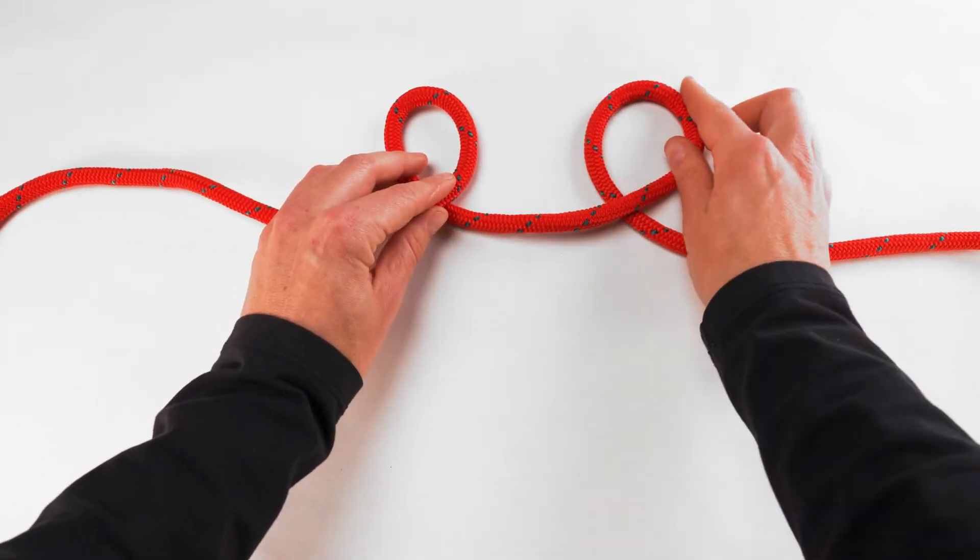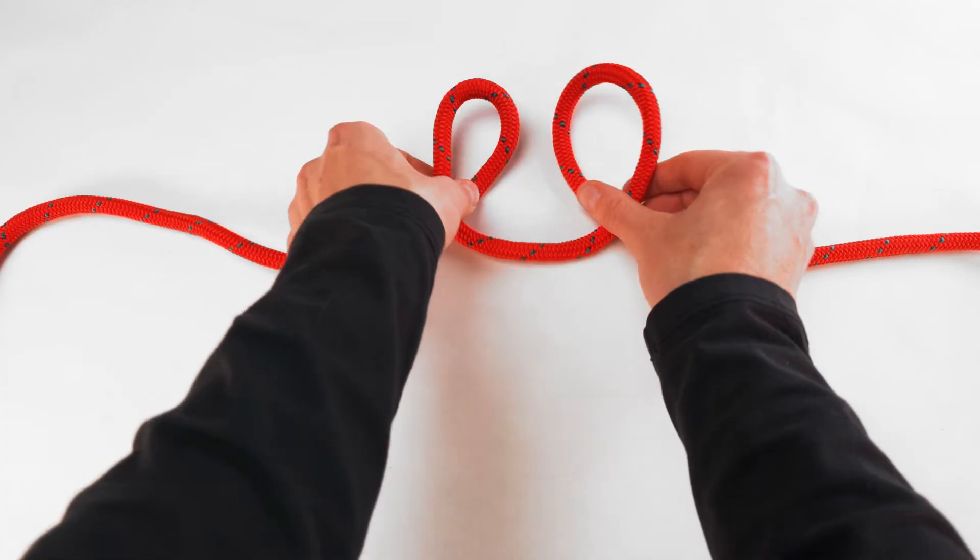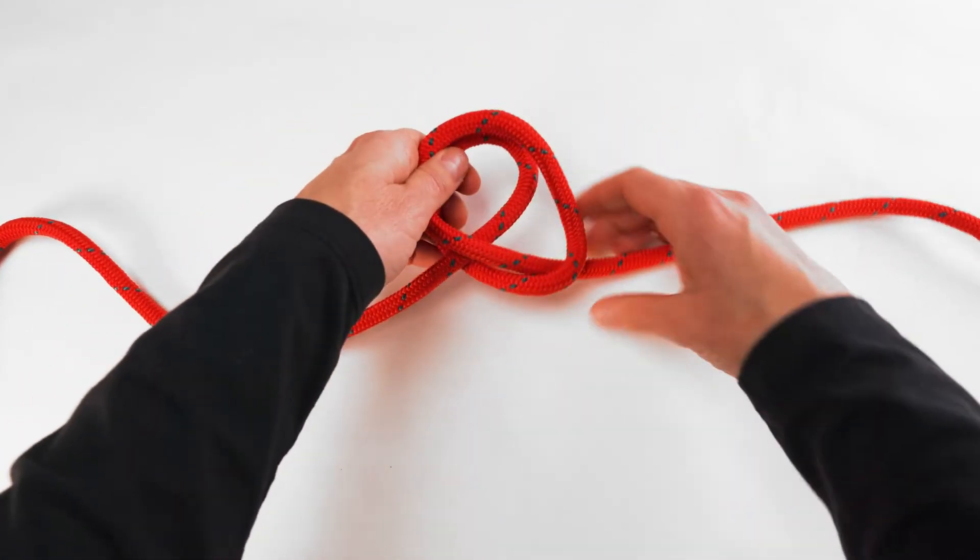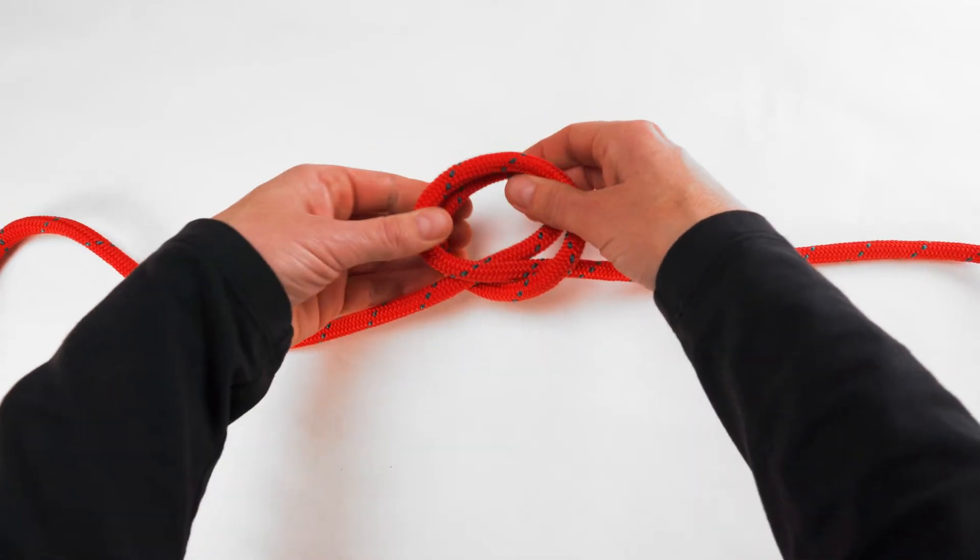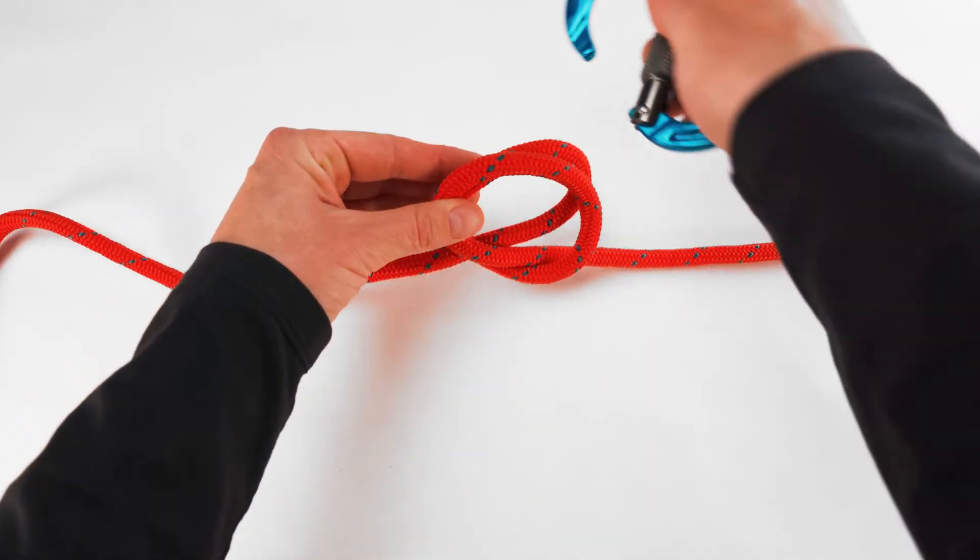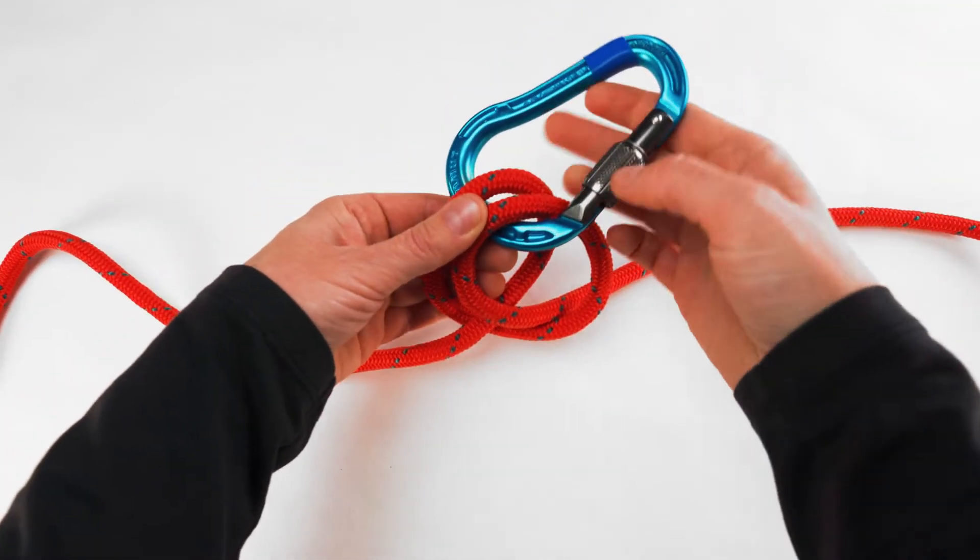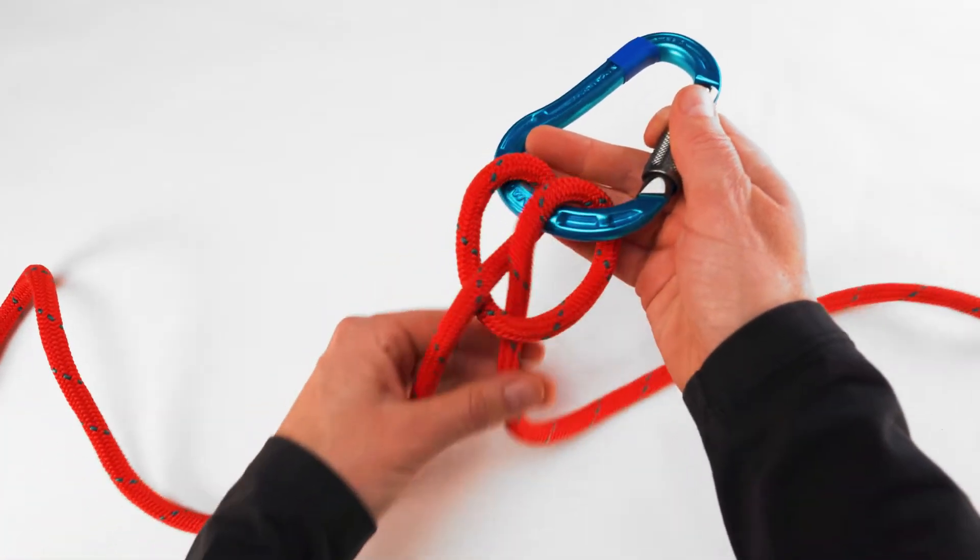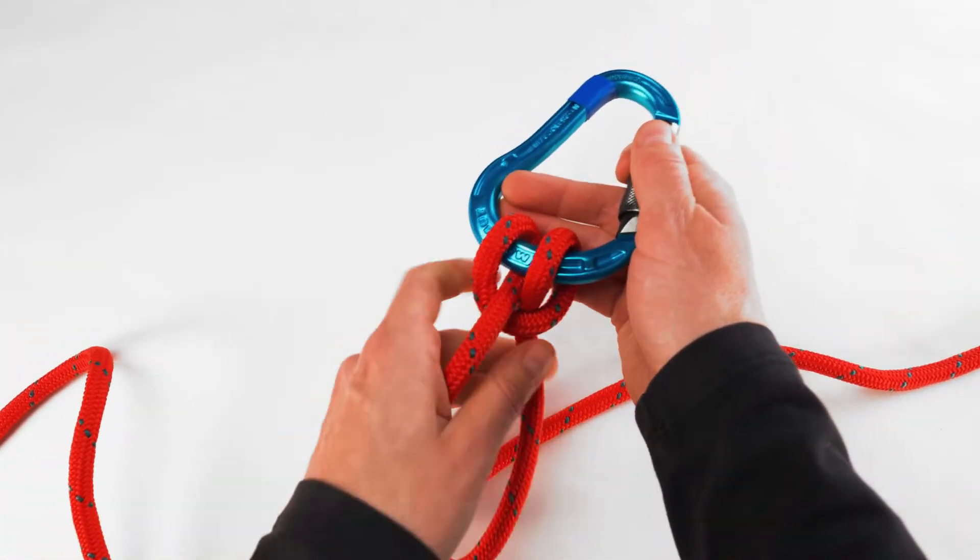Move the second loop behind the first. Place a carabiner through both loops and dress the hitch by tightening equally from both sides.